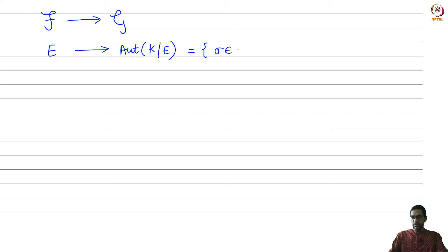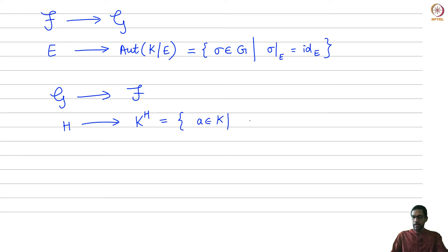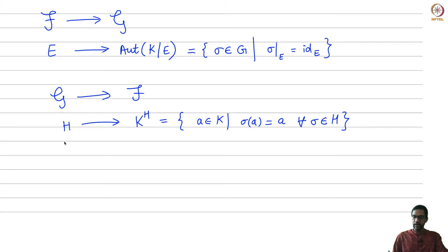This is the set of all sigma in G — automorphisms of k which are the identity on f — but something extra is required of sigma: sigma restricted to E should also be the identity on E. So sigma should fix every element of E, not just every element of f. The map in the other direction from G to script F is the following: given any subgroup H, you look at its fixed field K^H, which is the set of all elements a of k such that sigma(a) equals a for all sigma in H.